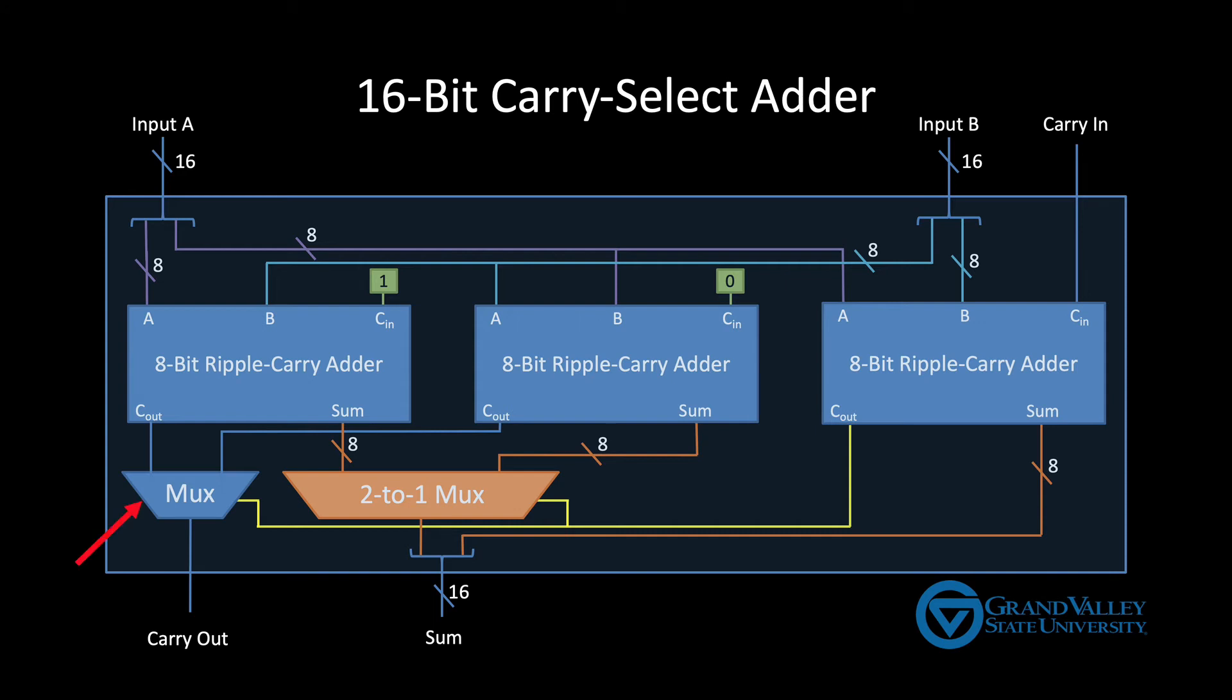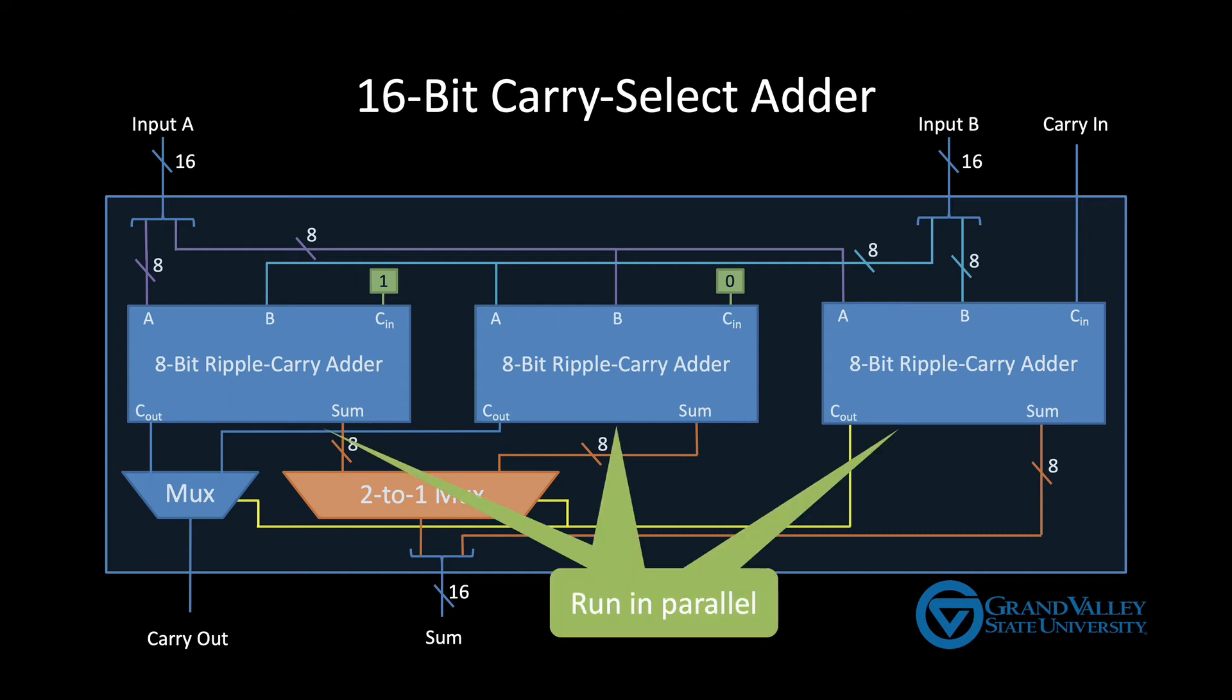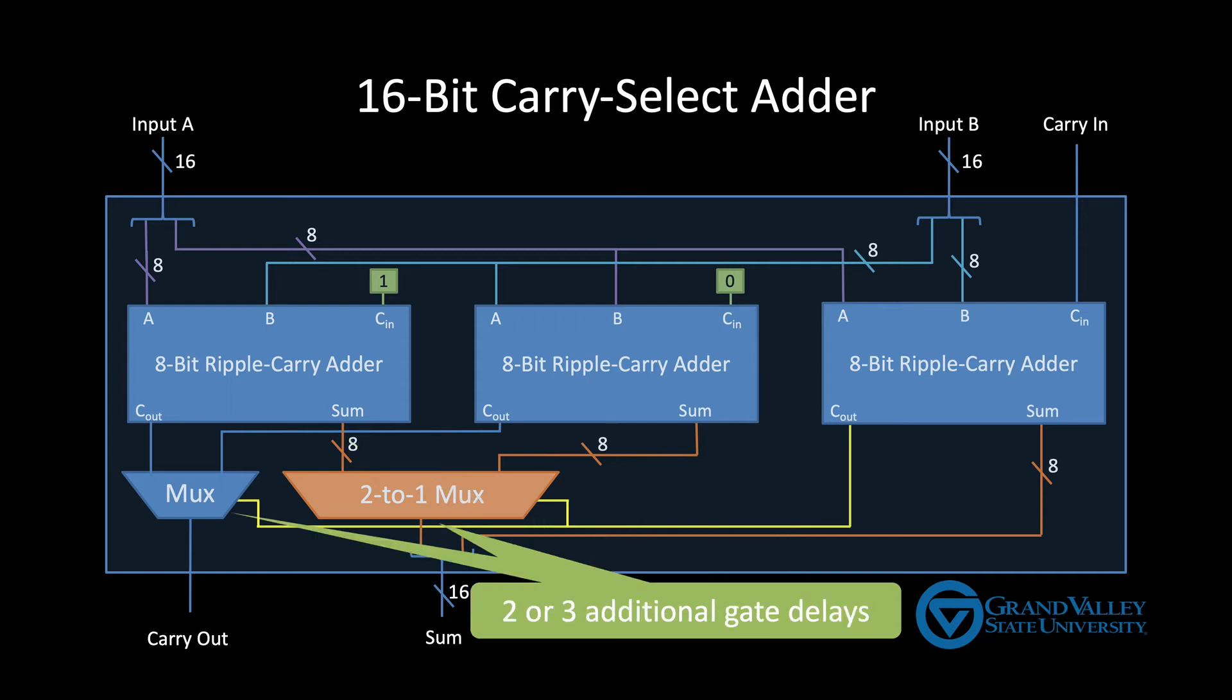Now remember the design shown here is almost twice as fast as a 16-bit ripple carry adder. All three eight-bit adders run in parallel and an eight-bit ripple carry adder is twice as fast as a 16-bit ripple carry adder. And then we have the MUX is at the end which just add two or three more gate delays.